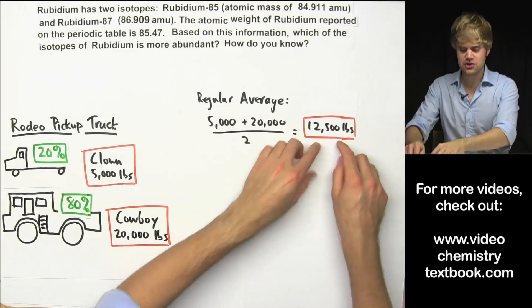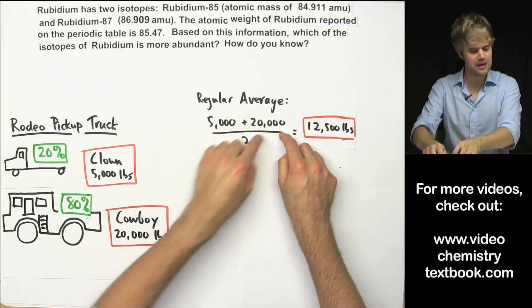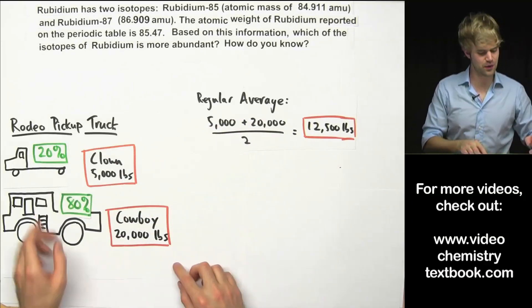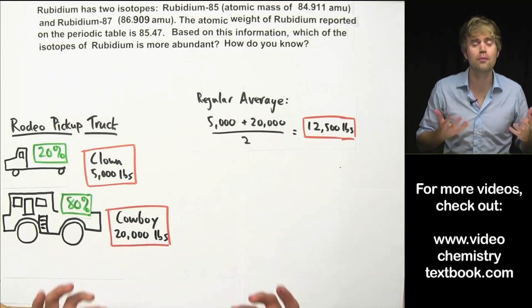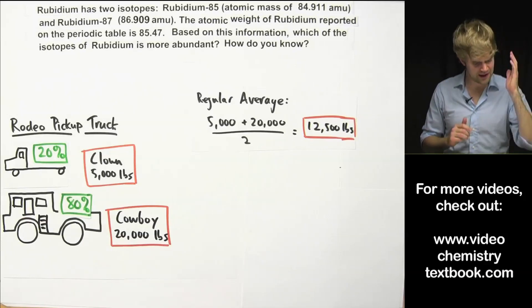Then this average doesn't really seem to make sense because it assumes that we have the same amount of both of these. But we have much more of the cowboy than of the clown, and the cowboy weighs a lot more.